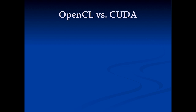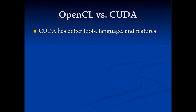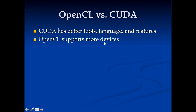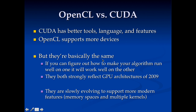A big question people ask is: what about OpenCL versus CUDA? Honestly, CUDA has better tools, it's a better language, and it has better features — NVIDIA works on it, they do whatever they want, and they've pushed it further ahead. However, OpenCL supports more devices. CUDA is great as long as you only want to use NVIDIA GPUs; it doesn't work at all on other vendors' GPUs. That said, these languages are basically the same in that they both expose and strongly reflect the architecture of a GPU. If you can make your algorithm work well in one, it'll work well in the other. CUDA is evolving much faster because NVIDIA doesn't need anyone's approval, while OpenCL evolves more slowly as an open standard requiring all companies to agree.